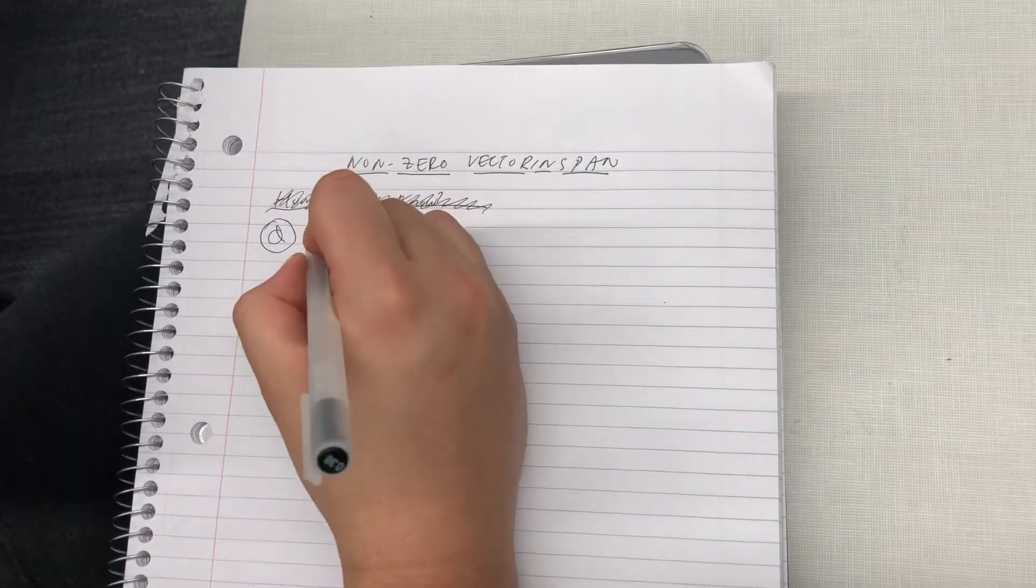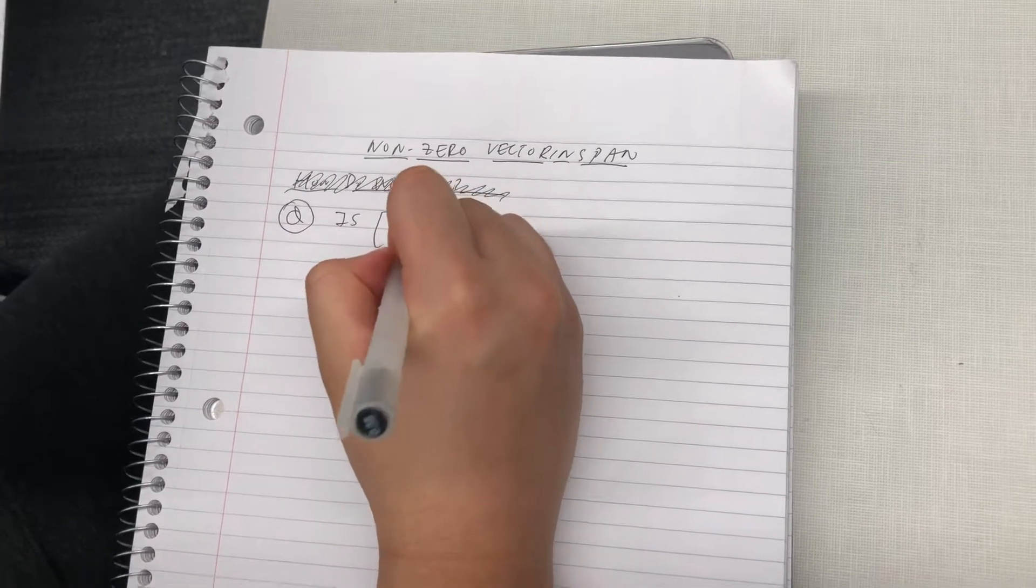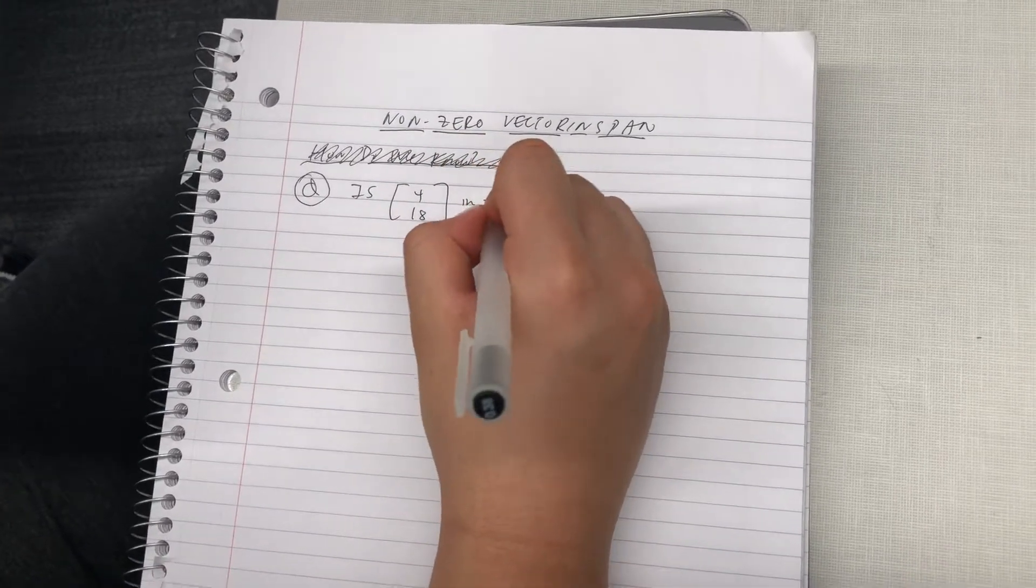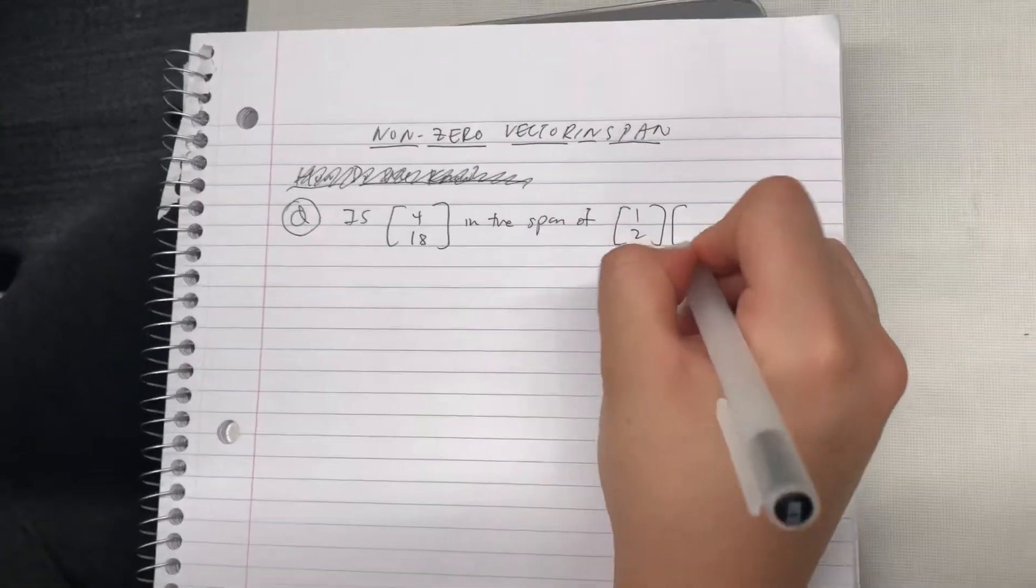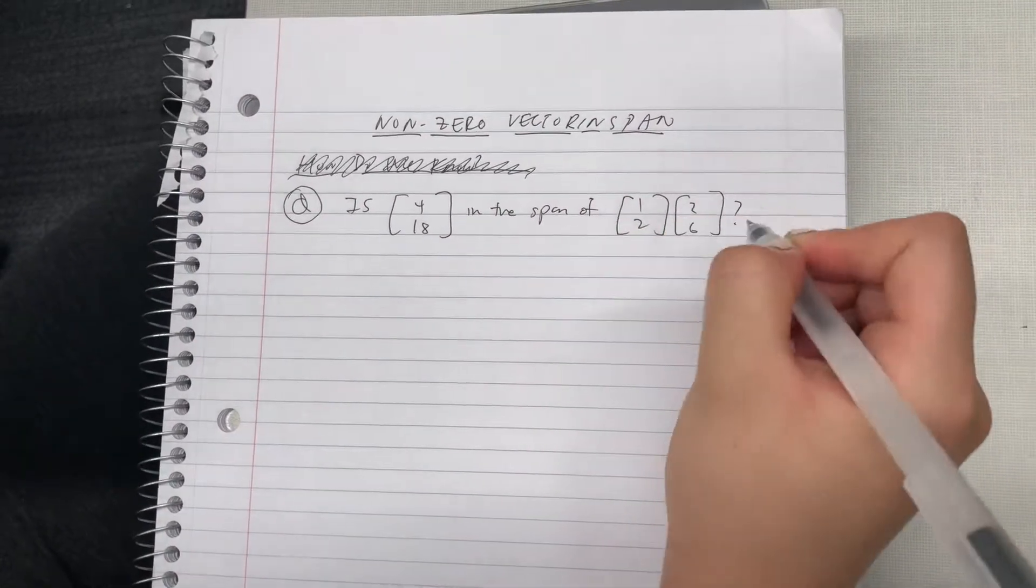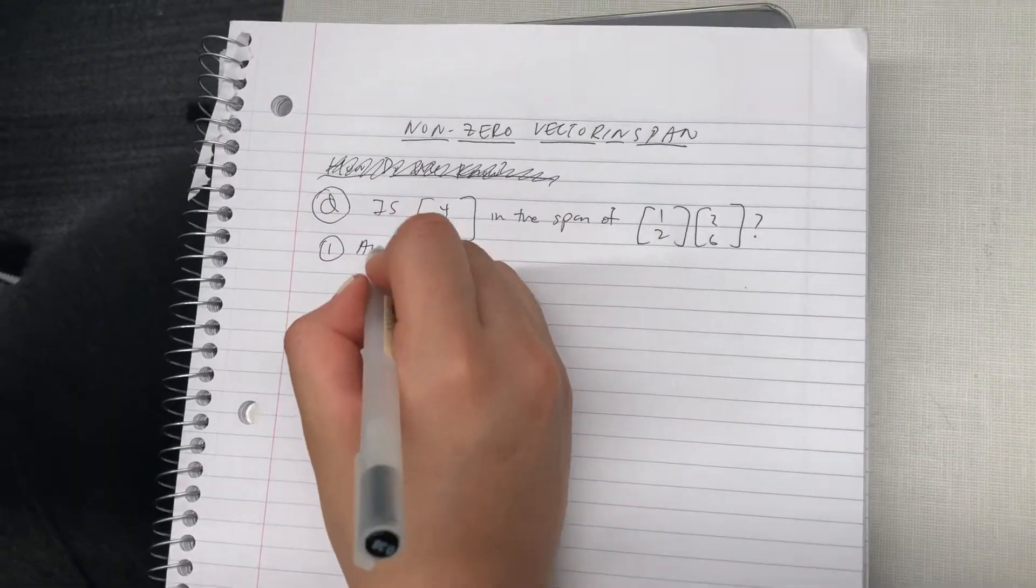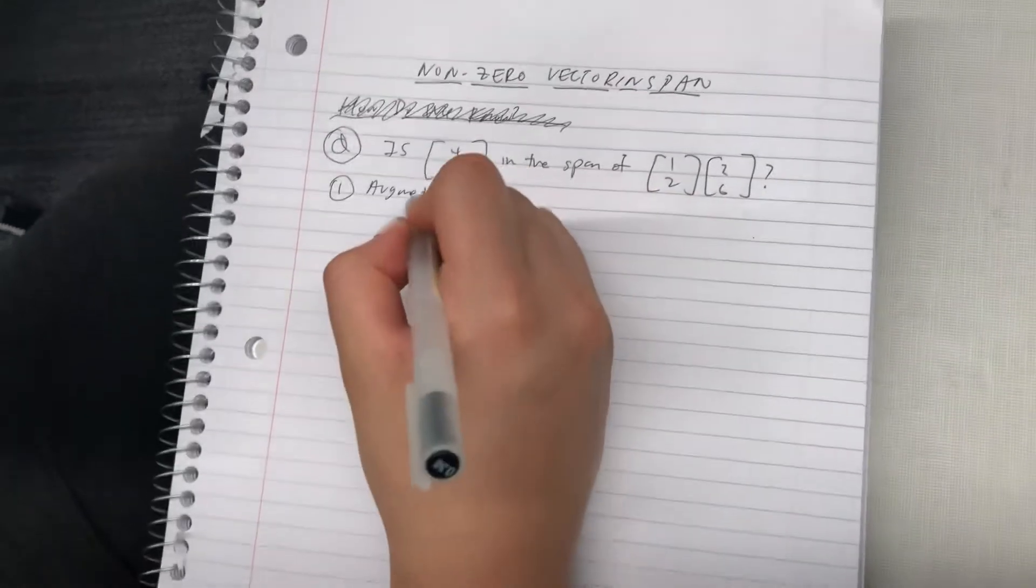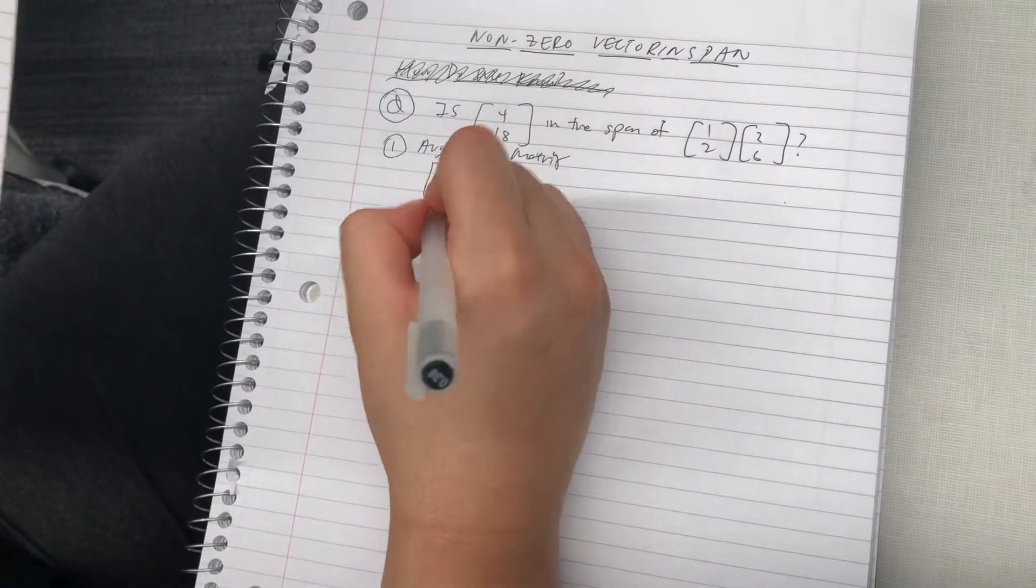So let's show an example. What we want to prove is [4, 18] in the span of [1, 2] and [2, 6]. So our first step is to create an augmented matrix that looks like this.